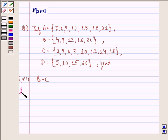Let us see the solution behind this. We see that the set B minus C is same as set singleton 20.